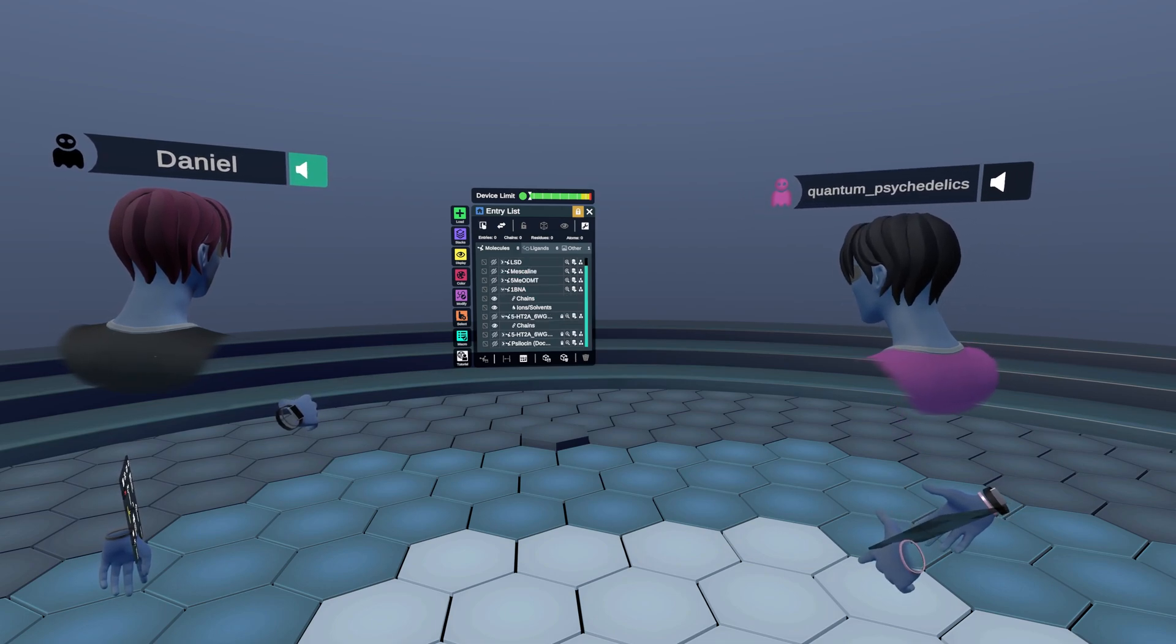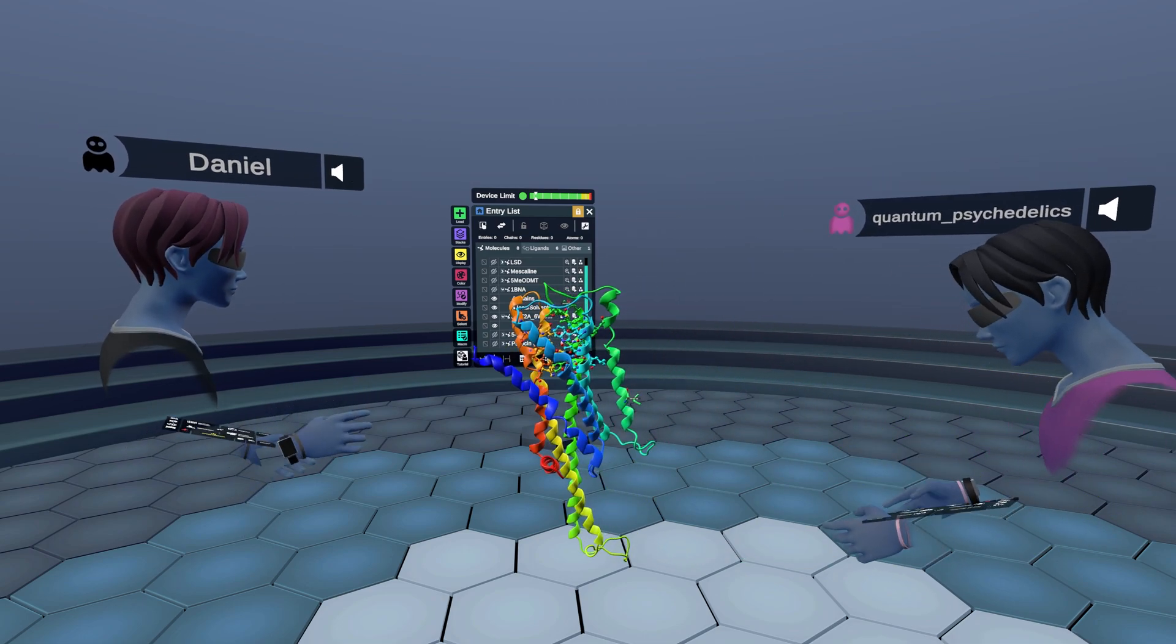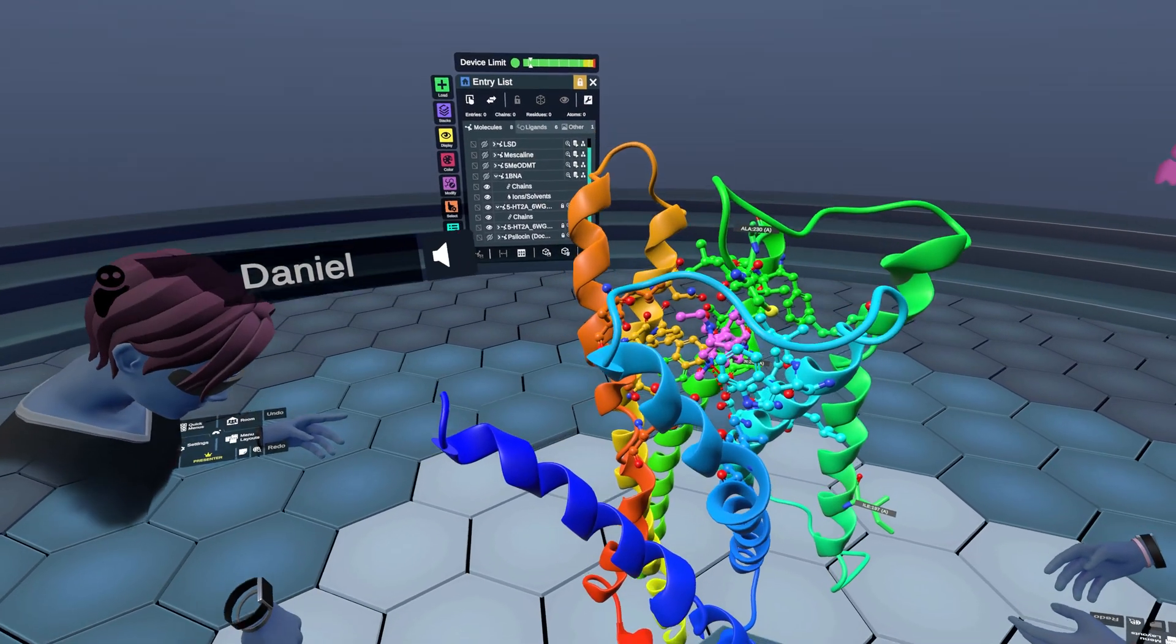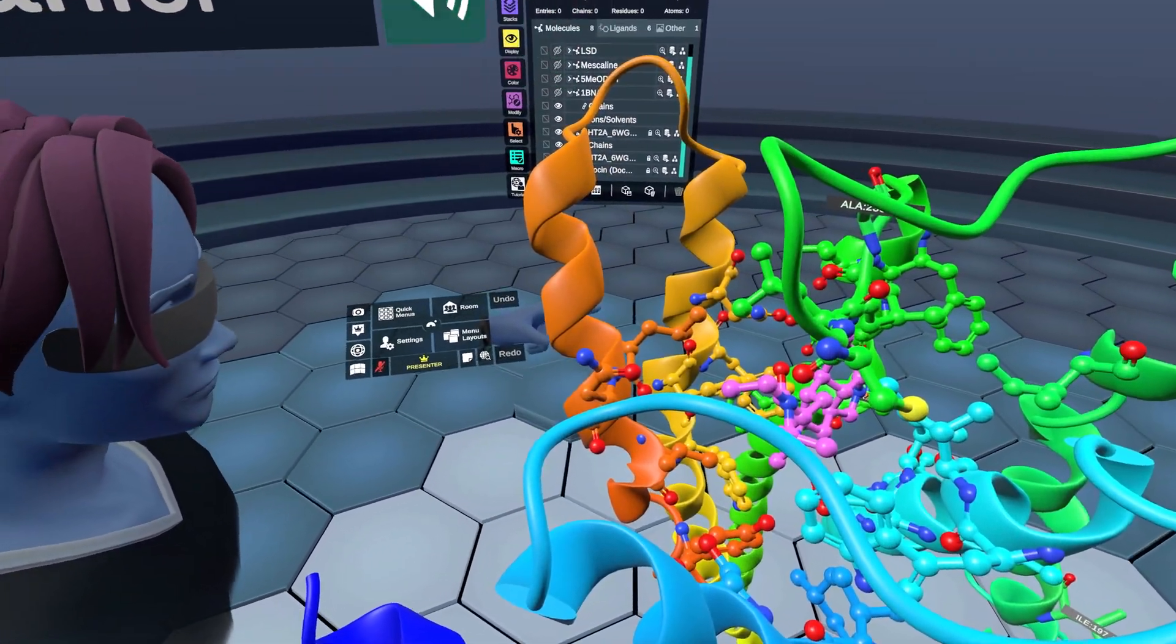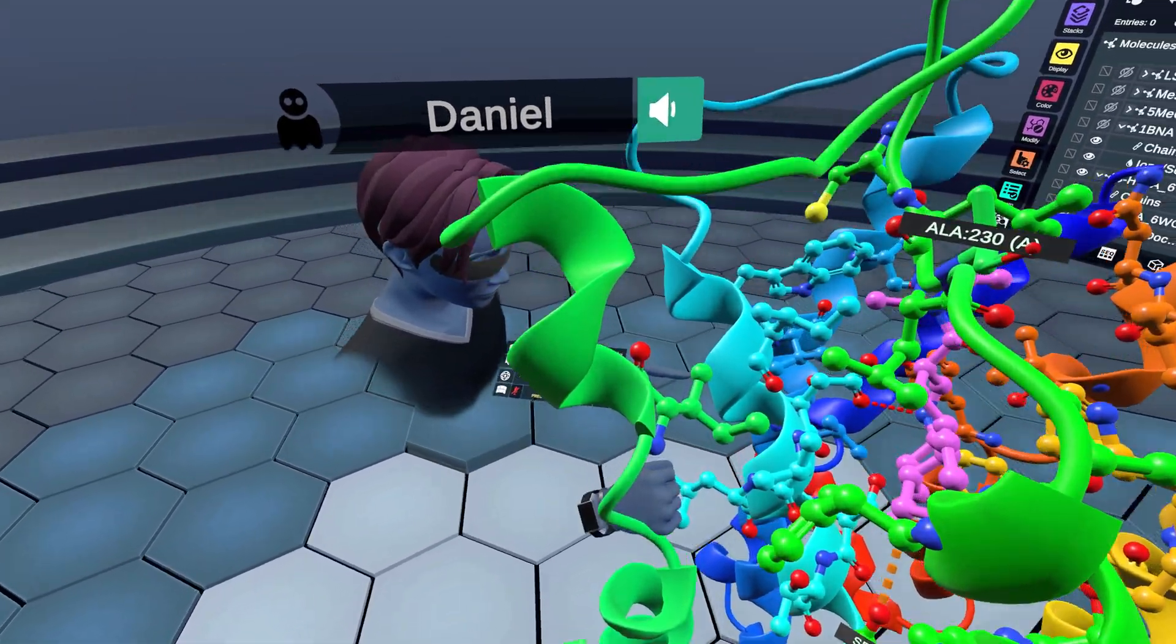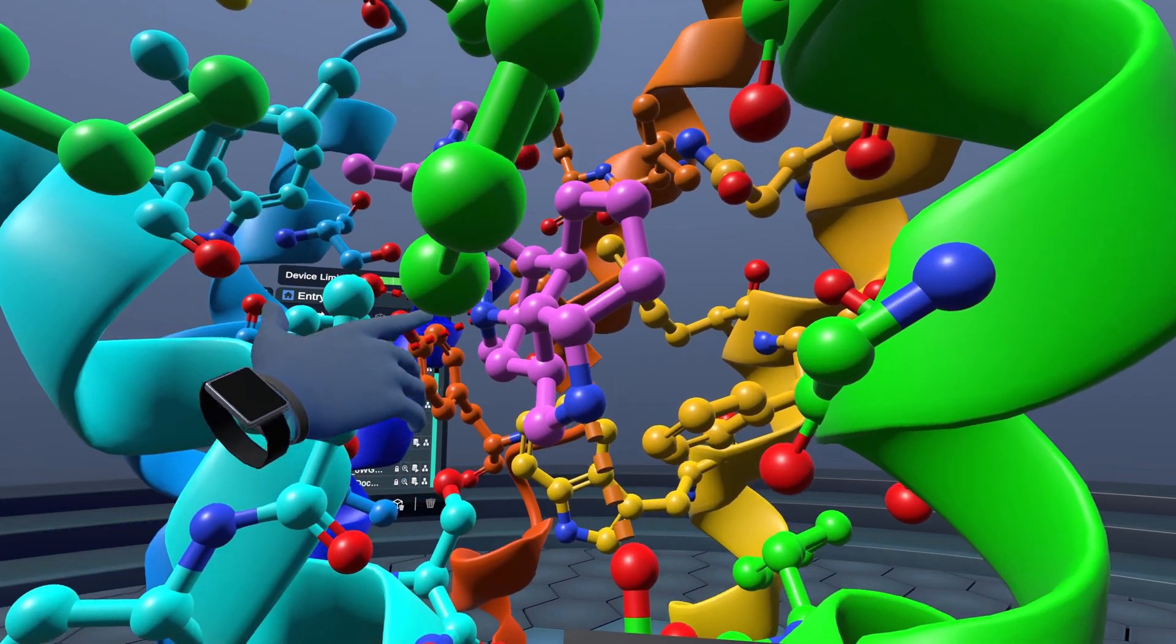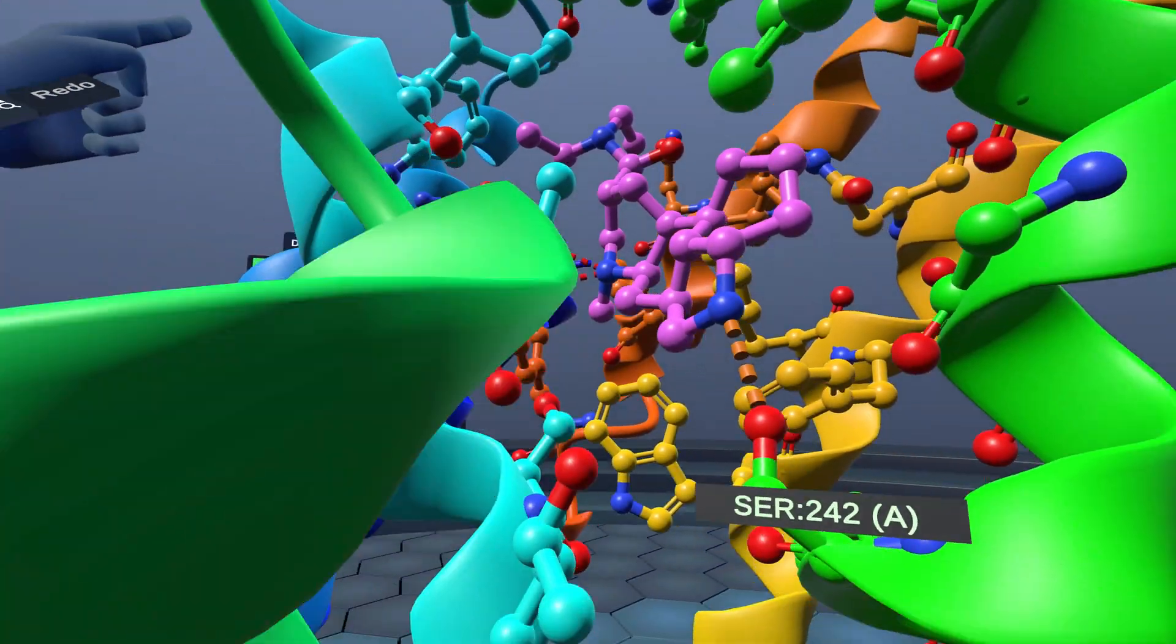All right. So we have here the 5-HT 2A serotonin receptor, and we have it actually docked with LSD, right? And so this is a rainbow representation. We have, first off, I want to mention we have this serine-242, which is important for binding. We have a strong hydrogen bond here, and then the salt bridge here with this other residue.